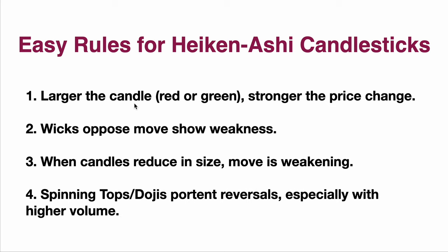The larger the candle — red going down or green going up — the stronger the price change. That's the price going up on a green candle, going down on a red candle. Wicks opposing the move — that would be an up wick on a red down candle or a down wick on a green up candle in the opposite direction — they're showing weakness. The bigger those are, the more weakness. Doesn't mean things are changing, just means there's some weakness there. Pay attention to what the volume is, because the more volume, potentially the more weakness, the closer you might be to a down move.